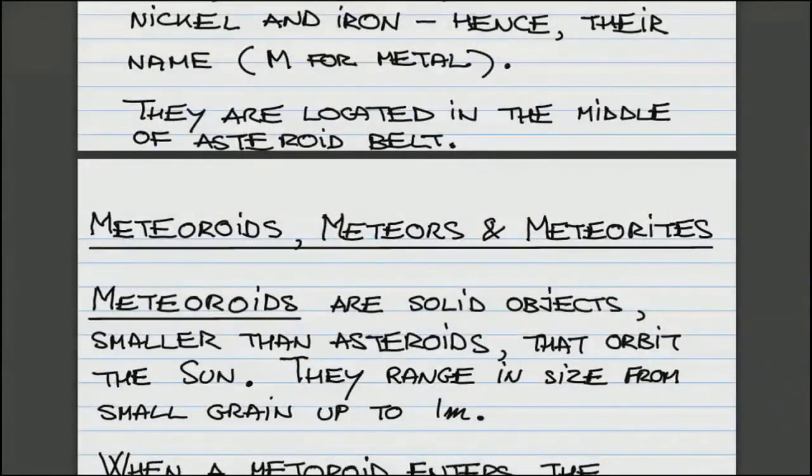The next type of object are meteoroids. They are solid, just like asteroids, but they are much smaller.